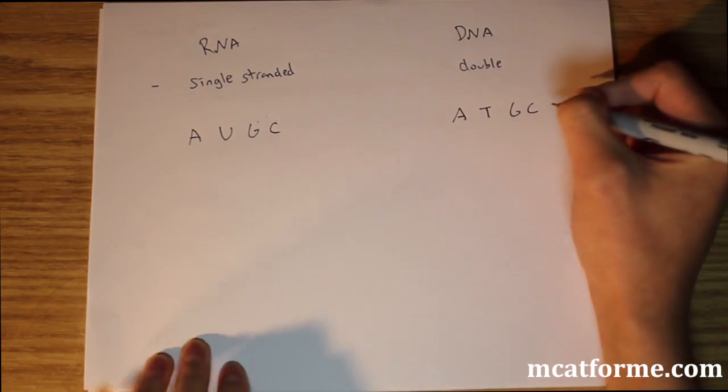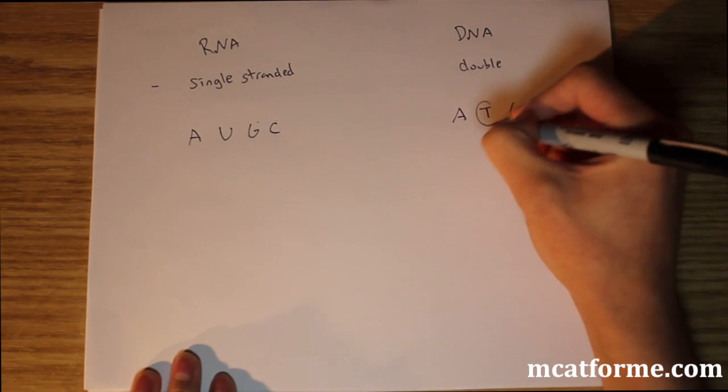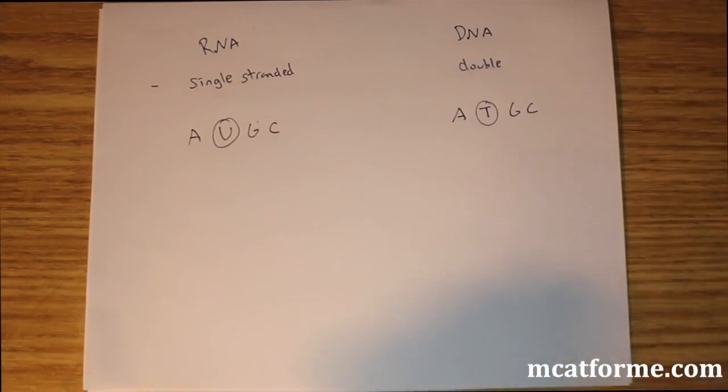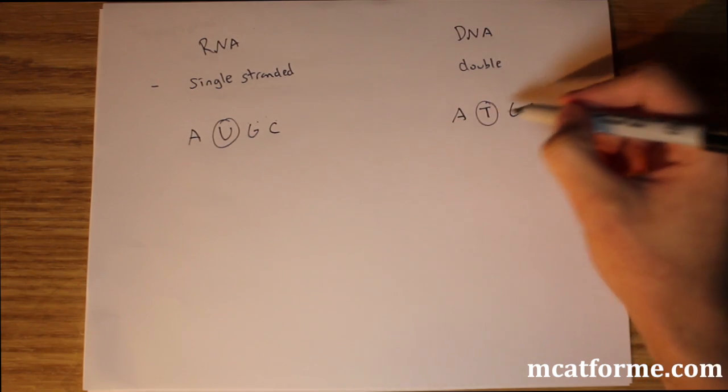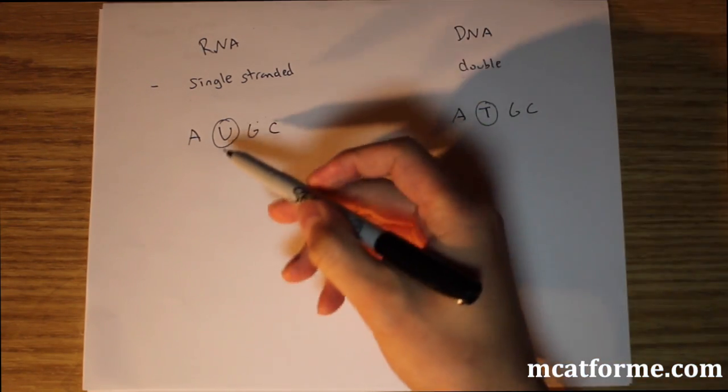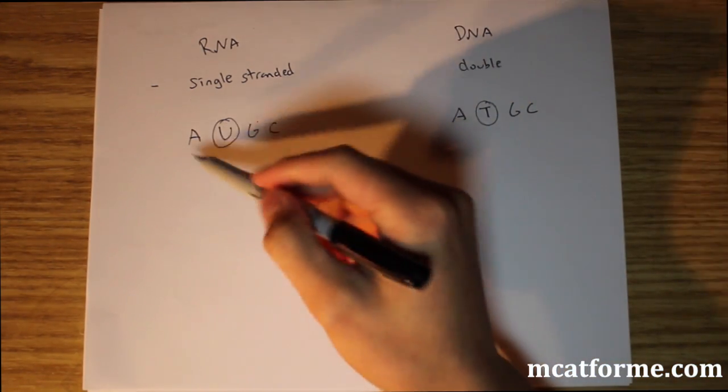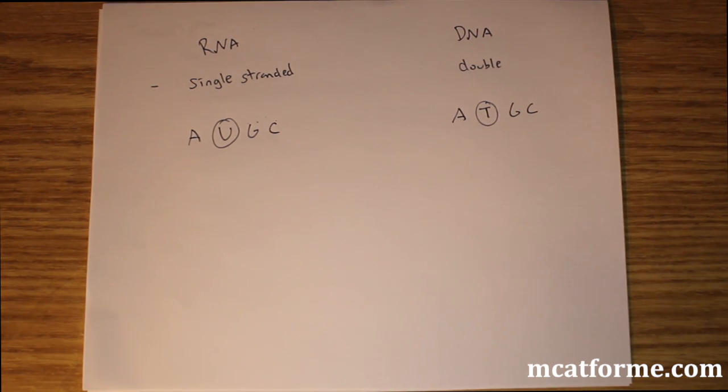So we see that what has changed is the T and the U. And so if we can remember A binds with T and G binds with C, so the same would be true. G binds with C, and so now we can pretty much assume that A is going to bind with U.